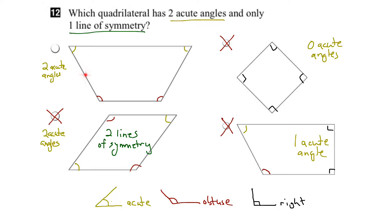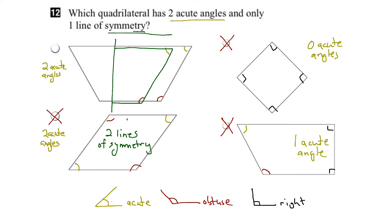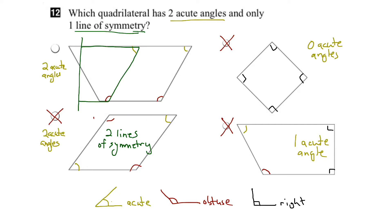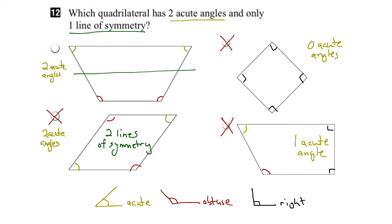So it looks like our first option is the right answer, but let's double check by going through the process. Starting with a vertical line of symmetry — if I draw and flip this shape, we see that it does match up on the other side, so there is one line of symmetry, which is a vertical line. Let's try horizontal: if I flip this shape over the horizontal line, I'd end up with something that is not symmetrical and doesn't match up, so that's not a line of symmetry.